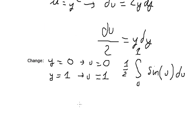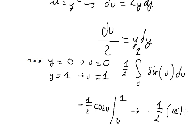And now we got a final answer that should be negative one half cosine u, and we have the boundary from zero to one. So we got negative one half, cosine of one minus cosine of zero is about one. That's the end, thank you for watching.